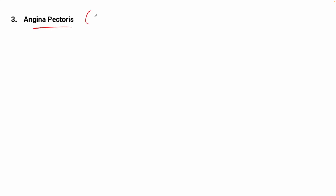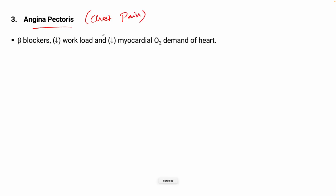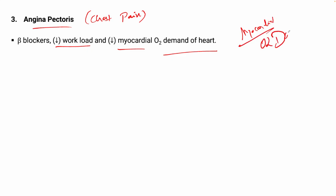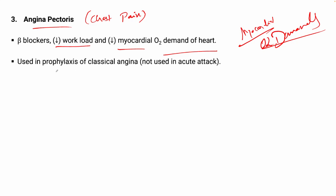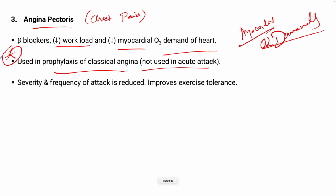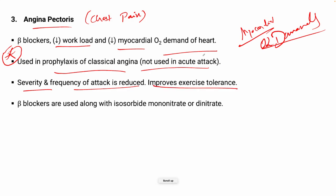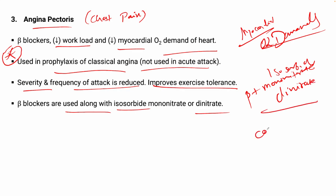Next is angina pectoris, that is chest pain. Beta blockers decrease workload and myocardial O2 demand of the heart. They are used in treatment of classical angina but not in the acute attack — remember that point very well. Severity and frequency of attacks are reduced and exercise tolerance improves. Beta blockers are used in combination with isosorbide mononitrate or dinitrate as a combination drug.